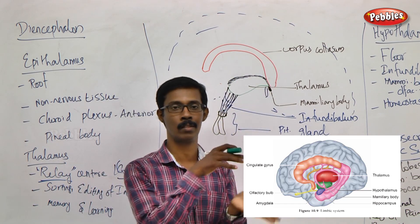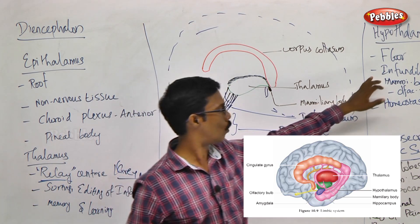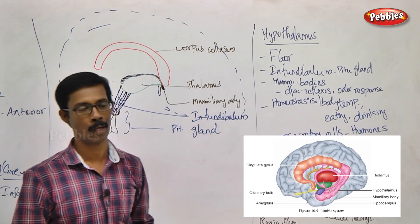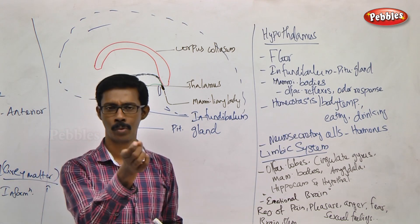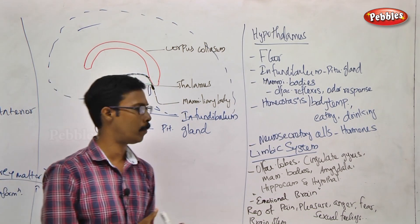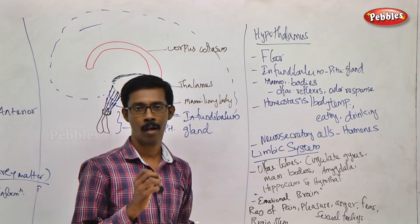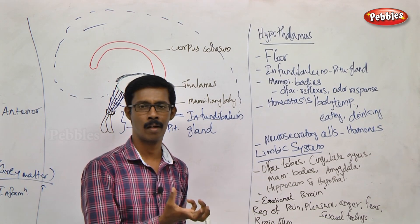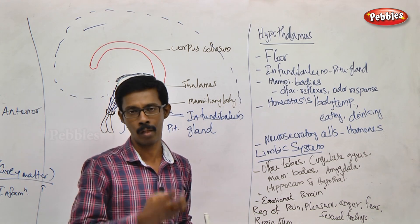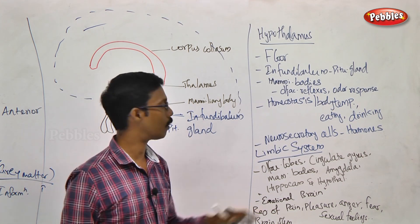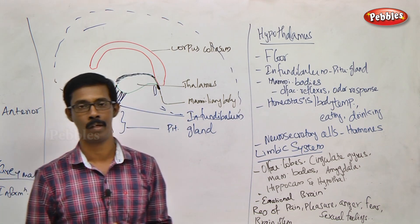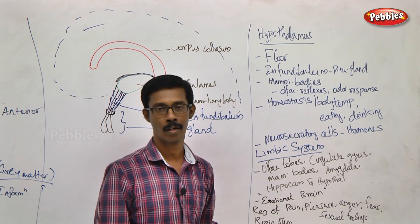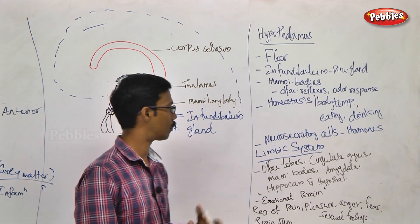In the Diencephalon, the roof is the epithalamus and the floor is the hypothalamus. There is also the Infundibulum and the pituitary gland. We will talk about Mammillary Bodies — small finger-like projections. Mammillary bodies play a role in Olfactory Reflexes. When a pungent smell occurs, our body produces a reflex response. That is the Mammillary Bodies in the hypothalamus controlling olfactory reflexes.